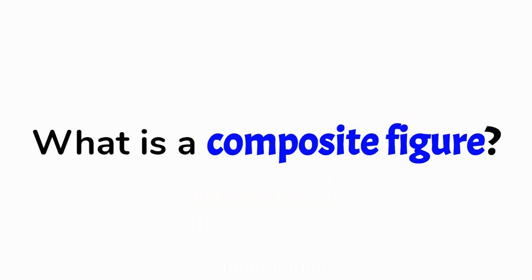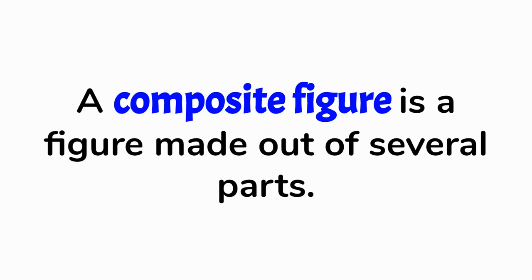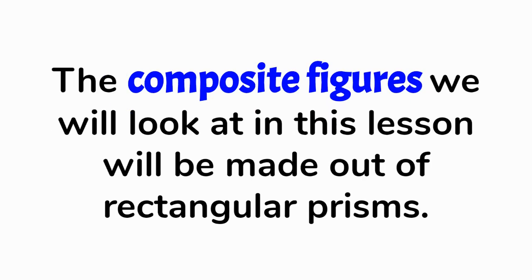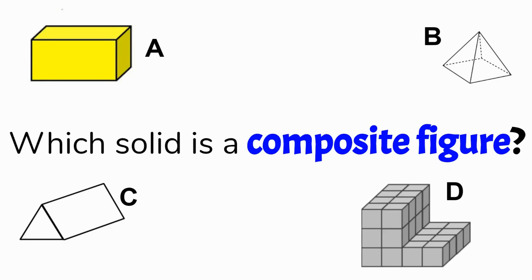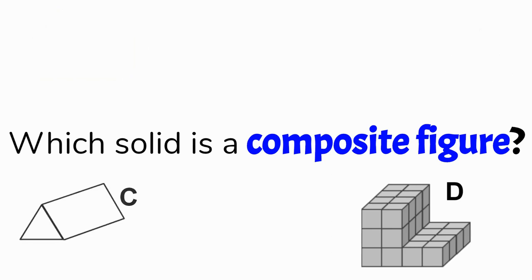Let's start off with what a composite figure is. A composite figure is a figure that is made out of several parts. The composite figures we will look at in this video lesson will be made out of rectangular prisms. Looking at this picture, can you tell which one is the composite figure? Is it A, B, C, or D? The correct answer is D, because this figure is made out of two rectangular prisms that are put together.